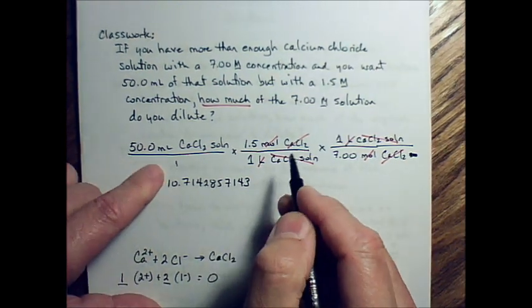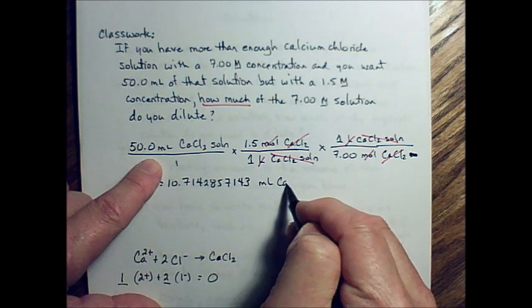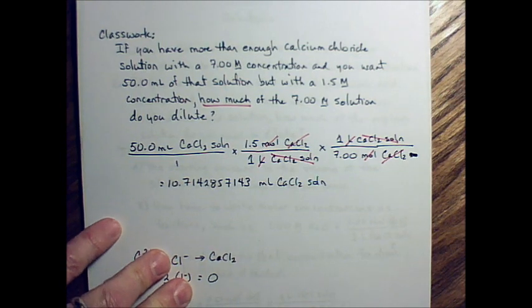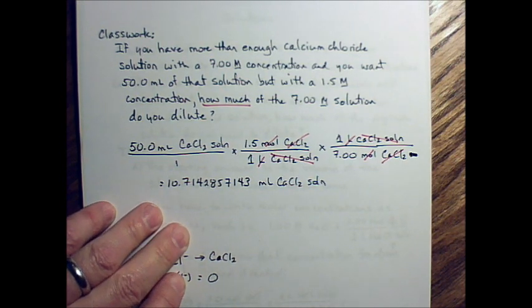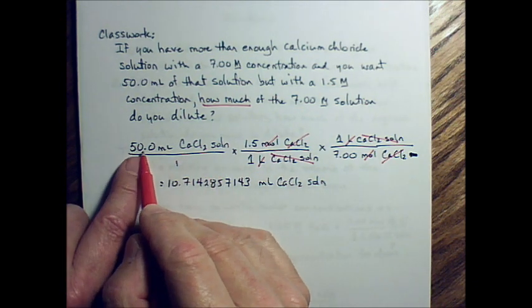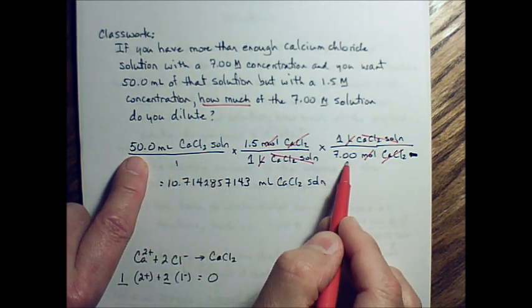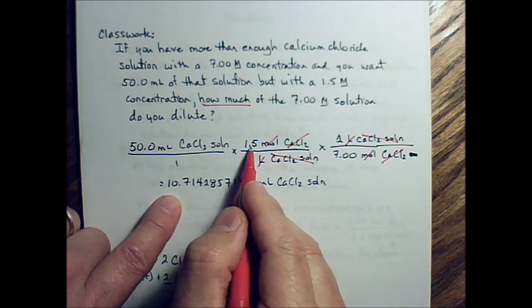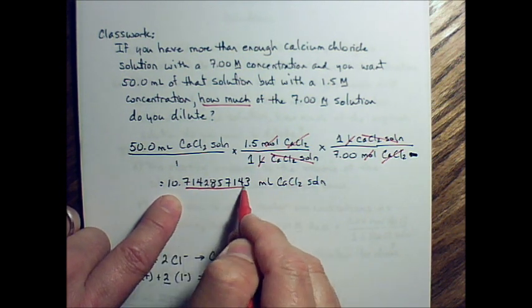What I have here is milliliters of a calcium chloride solution. I want to underline all the insignificant digits. Looking at the measured and calculated numbers here - this is measured, calculated, calculated - this one has the least digits. I want the same number of digits. This is the number that's least precise, so I only need two digits.